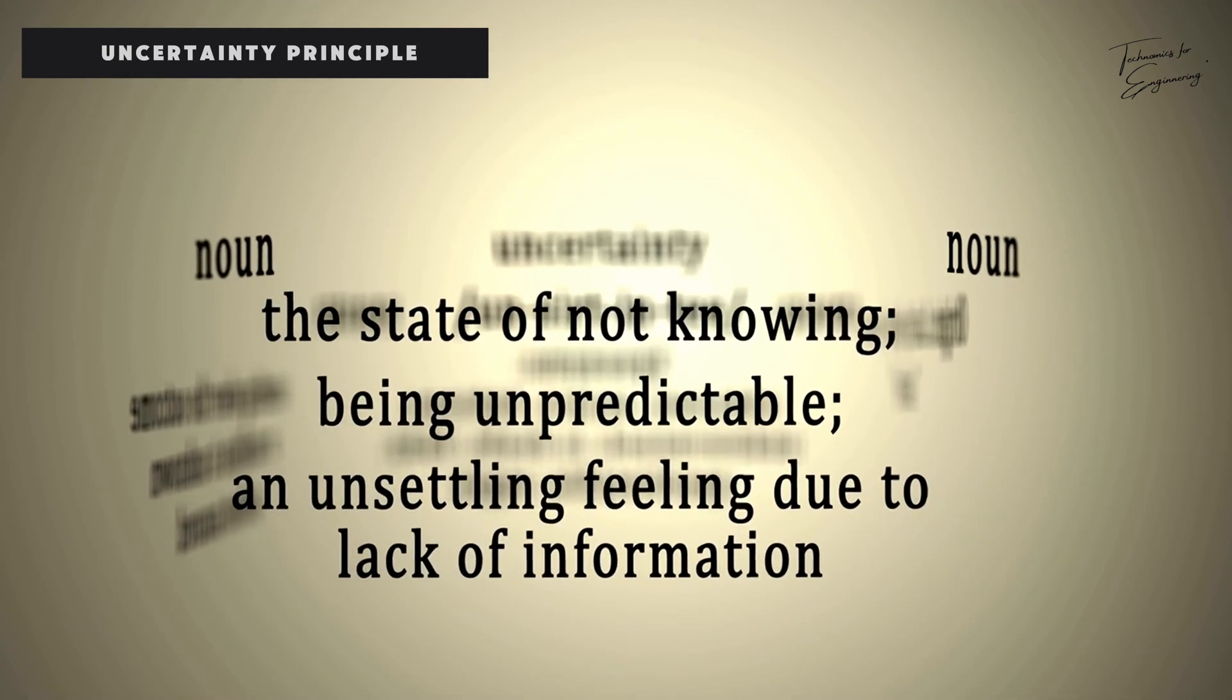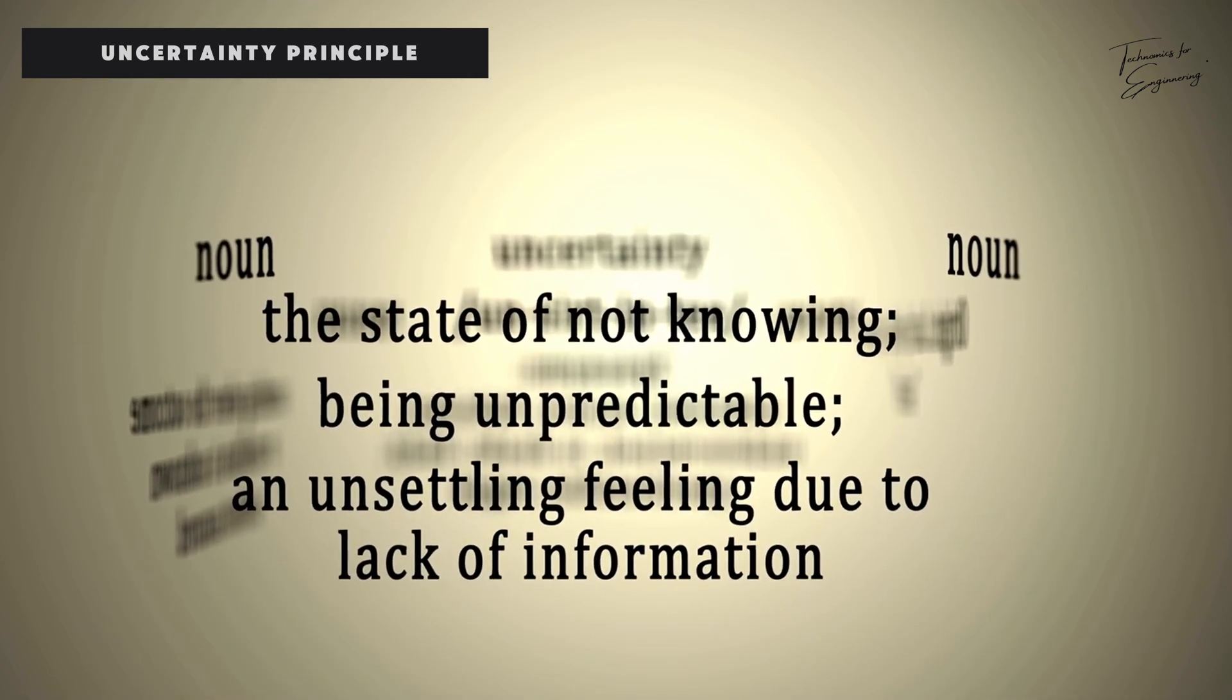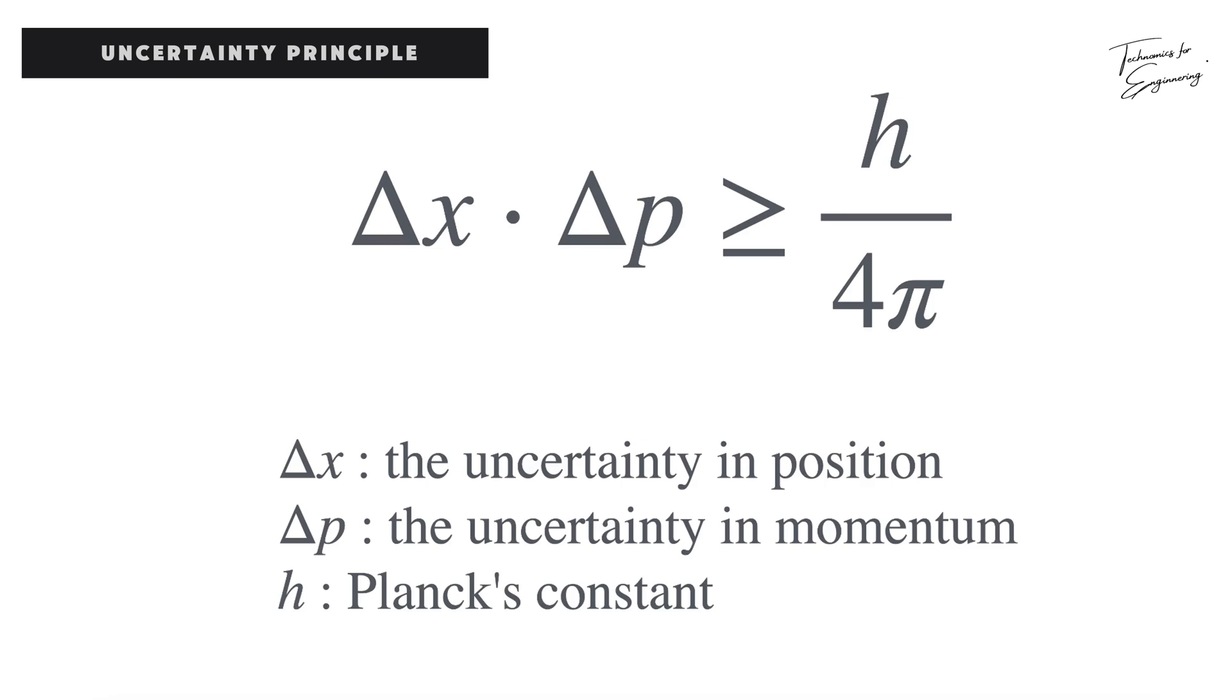Heisenberg's uncertainty principle is one of the core concepts of quantum mechanics, stating that the position and momentum of a particle cannot be measured accurately at the same time. It is expressed in the formula, where delta x is the uncertainty in position, delta p is the uncertainty in momentum, and h is Planck's constant.